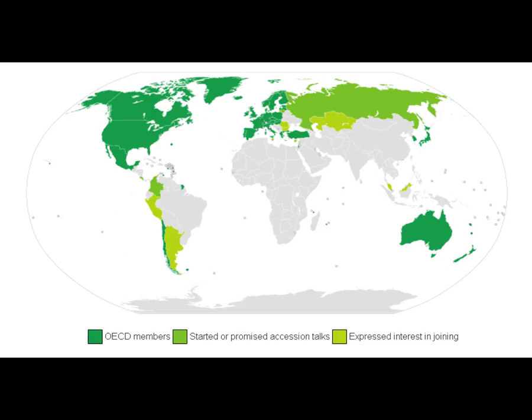Here is a map of the member countries of the OECD. As you can see, we're basically looking at the global north, with Chile and Australia being the outliers. The middle shade of green shows several countries that have started talks to join the OECD, most notably Russia. The lightest shade of green shows countries that have expressed interest in joining but have not started talks, including Argentina and Peru. Right now it's still predominantly made up of countries in the global north.